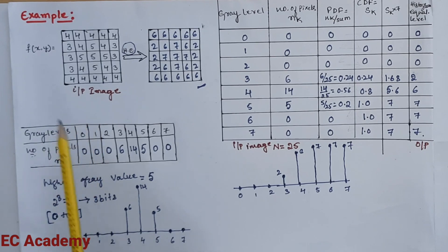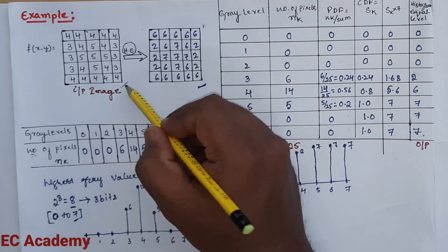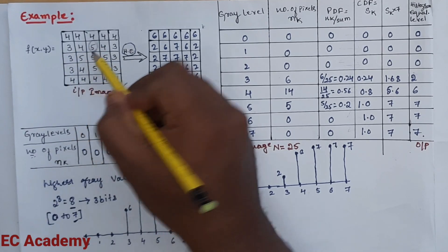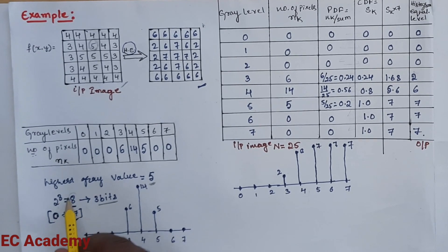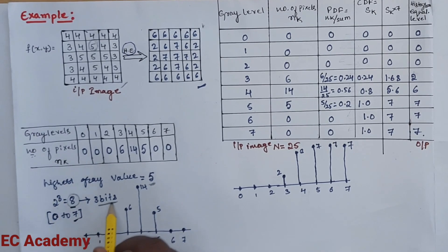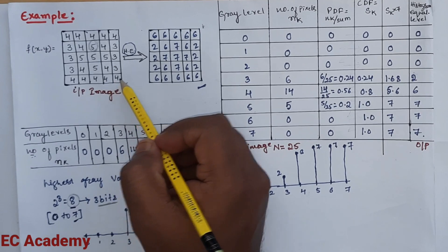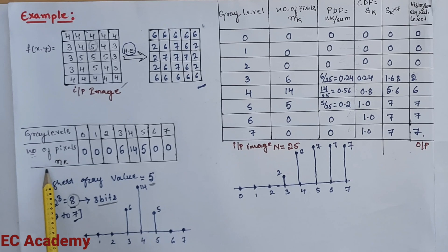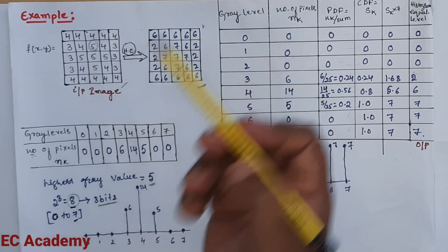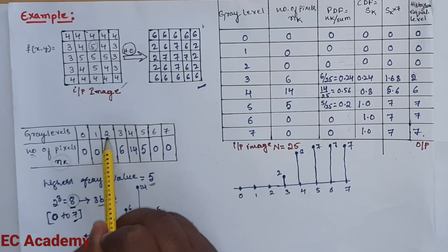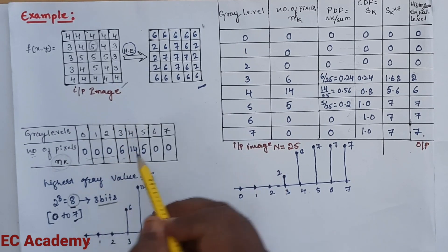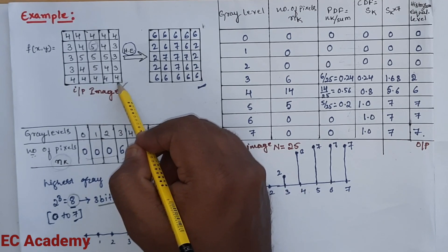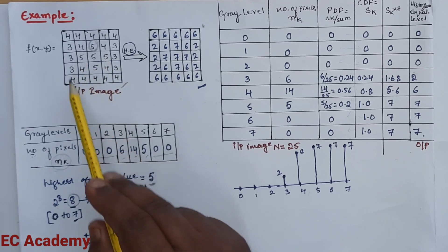Let us take an example to understand histogram equalization. Consider this input image where the highest pixel value is 5. Since 2³ = 8, we require 3 bits, allowing us to represent values from 0 to 7. Gray levels 0, 1, and 2 are not present in the image (count = 0). Gray level 3 appears 6 times, 4 appears 14 times, 5 appears 5 times, and 6 and 7 are not present (count = 0).